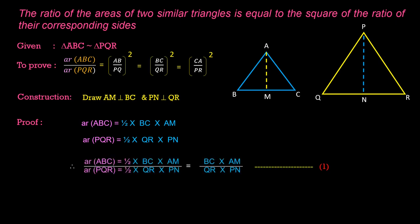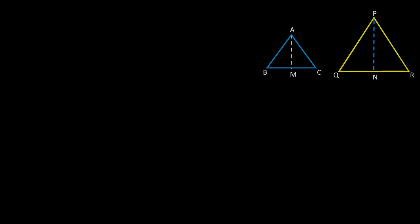Let us consider the ratio of the areas of these two triangles. Here, the halves cancel, and we are left with BC by QR times AM by PN on the RHS. To show that area of ABC by area of PQR equals BC by QR whole squared, we have to show that AM by PN equals BC by QR.